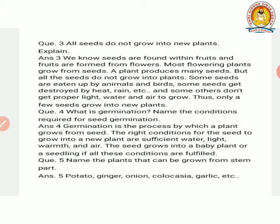First is, all seeds do not grow into new plants. Explain. We know seeds are found within fruits and fruits are formed from flowers. Most flowering plants grow from seeds. A plant produces many seeds but all the seeds do not grow into plants. Some will be eaten by animals, some by birds, some will be destroyed by heat, rain, etc., and others don't get proper light, water, and air to grow. Only a few seeds grow into new plants.